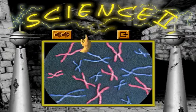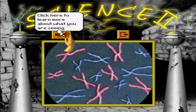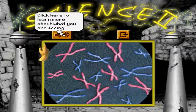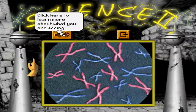These are chromosomes from a cell that was about to divide. Chromosomes are made of DNA wrapped around a protein framework. Almost every cell in your body has a full set of 46 chromosomes containing a complete copy of all your genetic information.